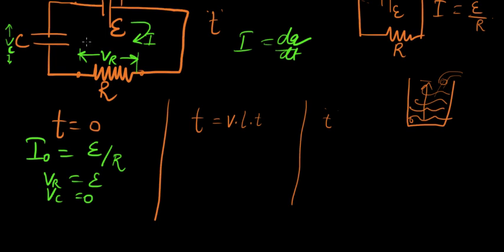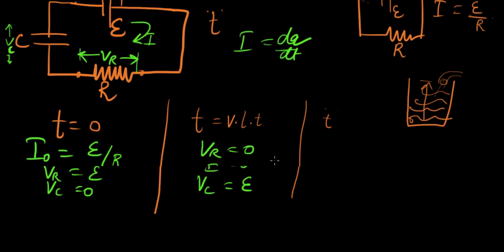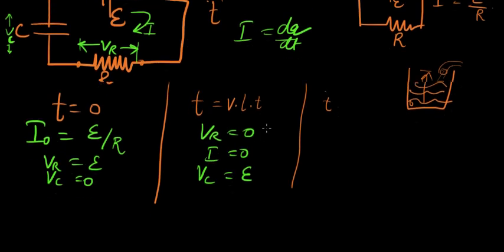All the charge there is in the circuit is now inside the capacitor. So there will be no current inside the circuit. At that time VR will be zero, I would be zero, and VC would equal E, the voltage of the battery itself.